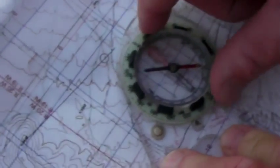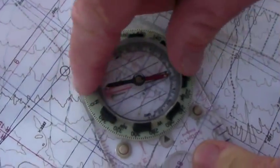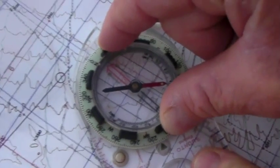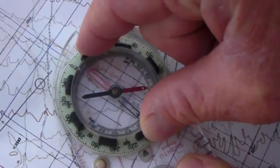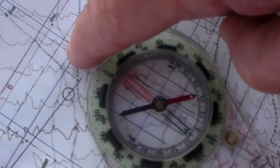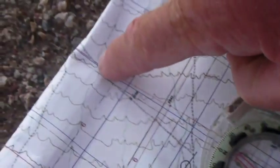I then turn the bezel ring. I'll do it again. I turn the bezel ring till north of the bezel ring is to the north side of the map and the index lines are parallel to the north-south grid line.